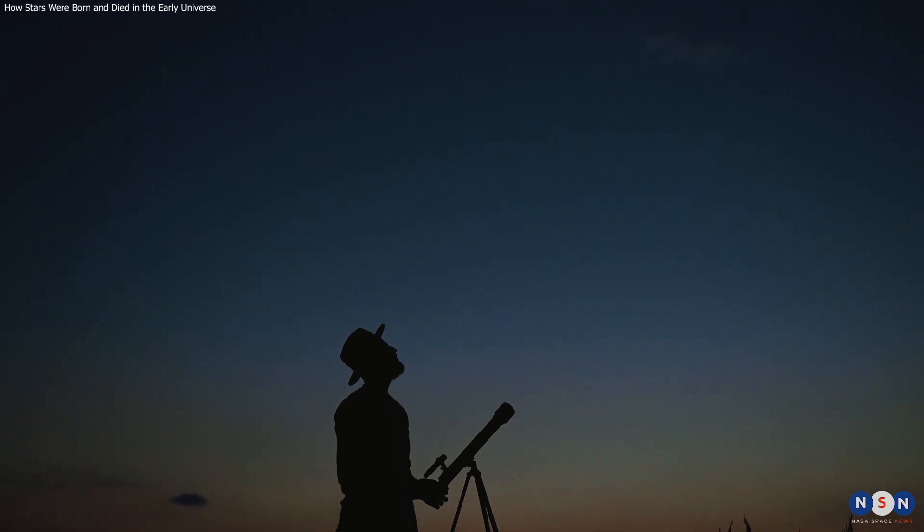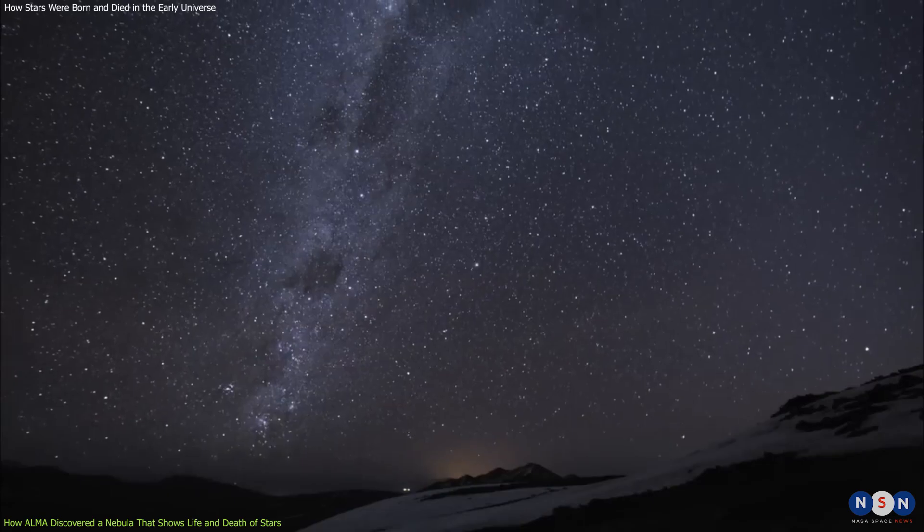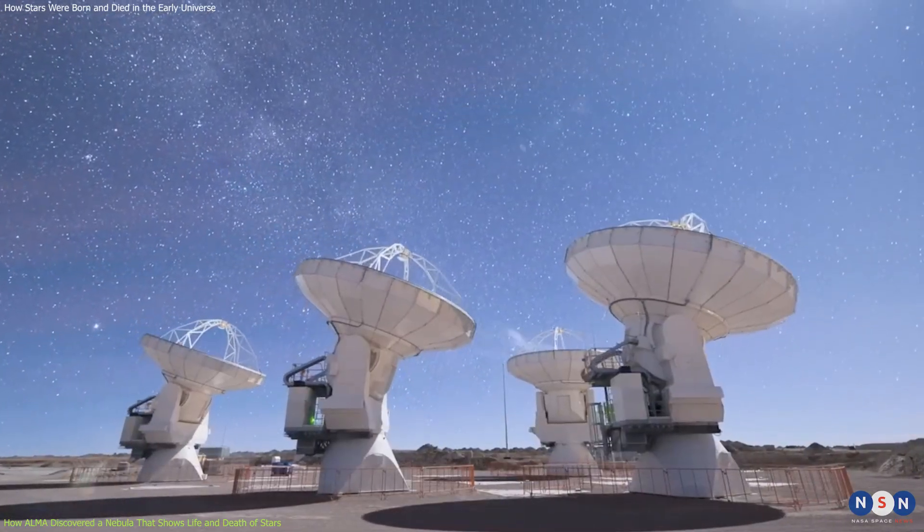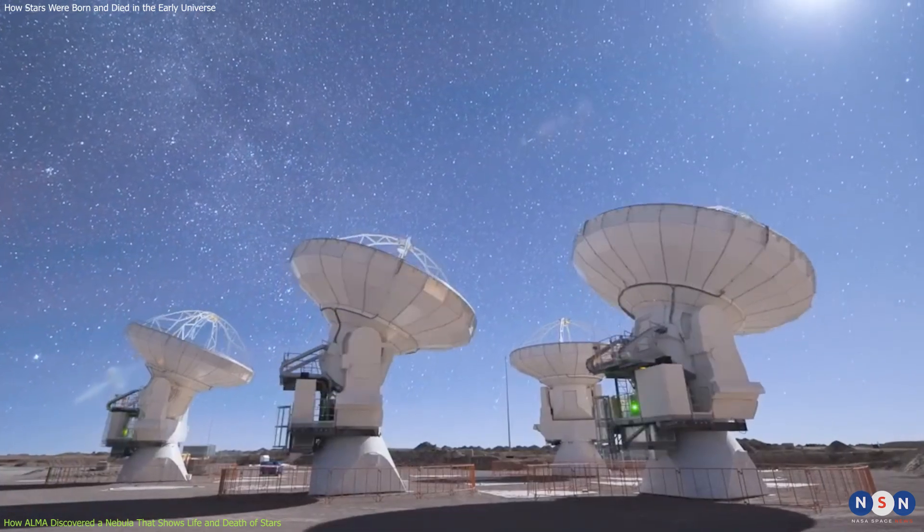How did astronomers discover this galaxy, and what did they learn from it? To answer these questions, we need to talk about a powerful telescope called the Atacama Large Millimeter Submillimeter Array, or ALMA, which is located in Chile and can observe radio waves from space.